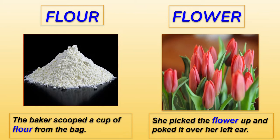Flour — when we're talking about F-L-O-U-R, it is the main ingredient when we bake a cake. 'The baker scooped a cup of flour from the bag to bake his cake.' And the other one is F-L-O-W-E-R — that is a flower, when we're talking about roses, lilies, natural beauty. 'She plucked the flower and put it over her left ear.' Both these words are a pair of homophones — identical in sound but different in meaning and spelling.